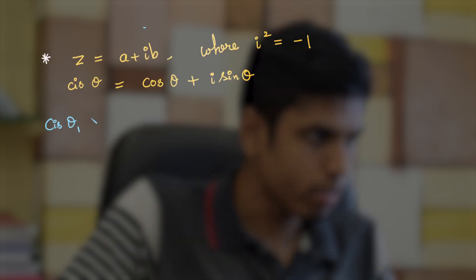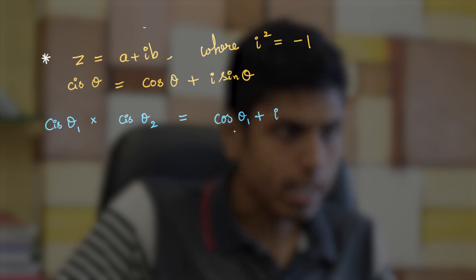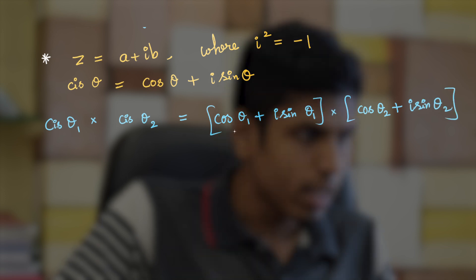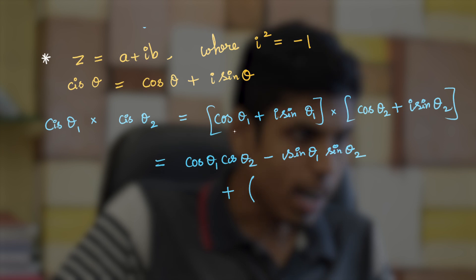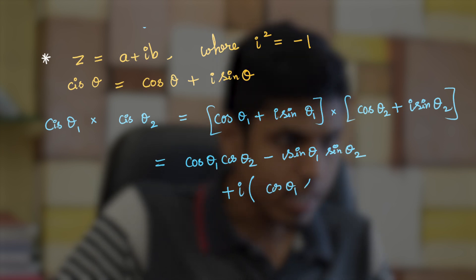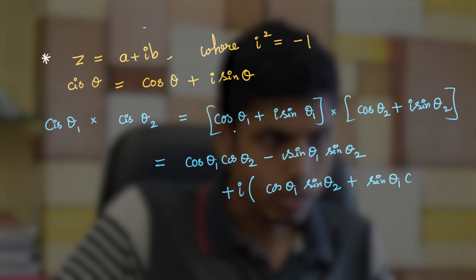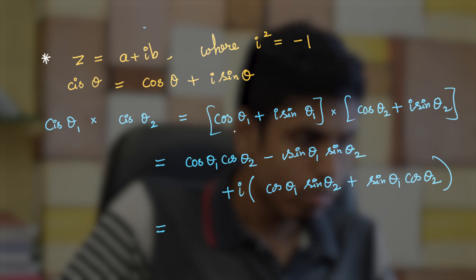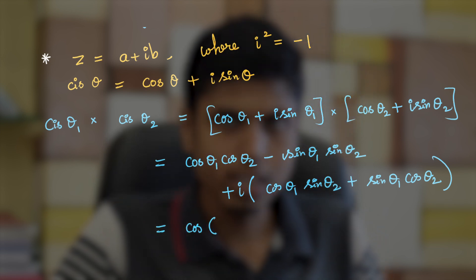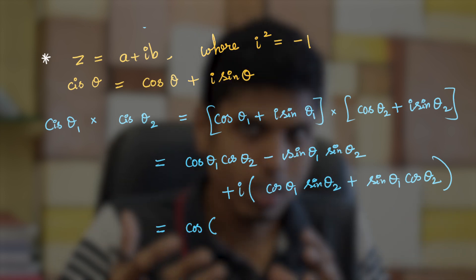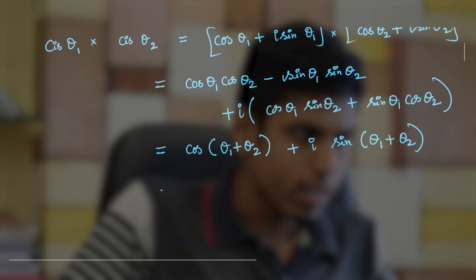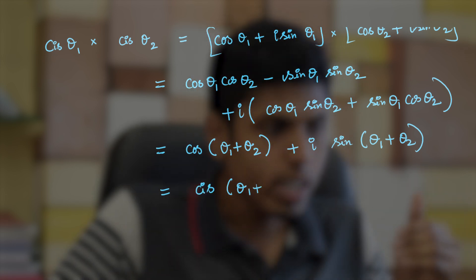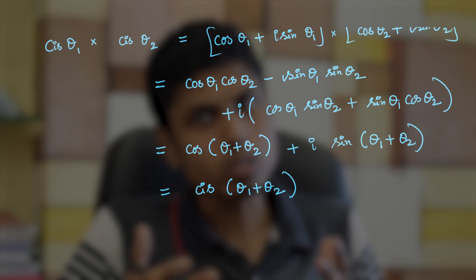Consider cis theta 1 multiplied with cis theta 2. This gives us (cos theta 1 plus i sin theta 1) times (cos theta 2 plus i sin theta 2). Expanding using the distributive law, we get cos theta 1 cos theta 2 minus sin theta 1 sin theta 2, plus i times (sin theta 1 cos theta 2 plus cos theta 1 sin theta 2). This simplifies to cos(theta 1 plus theta 2) plus i sin(theta 1 plus theta 2), which is cis(theta 1 plus theta 2).